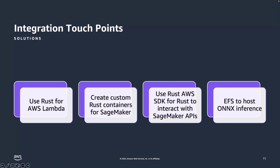There are also a couple of other really exciting integrations. One is EFS, which allows you to share an ONNX model directly with AWS Lambda. And then there's ONNX itself, which has great integration with both SageMaker and Rust.